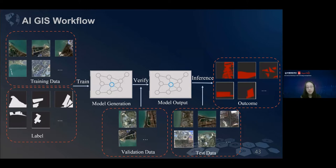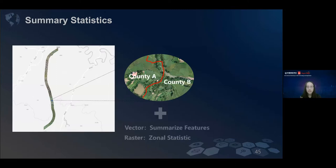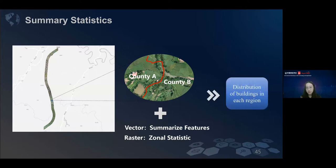This is our AI extraction result. You can see most of the buildings have been extracted pretty well. After the AI extraction, if we want to do a summary statistic, like there is a county A and a county B, we can use some zonal statistics or summarized features tools to get the distribution of buildings in each region. After that, we can do some cartography work, like to make a map or a chart to help us have a better understanding of the spatial distribution.